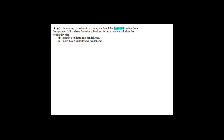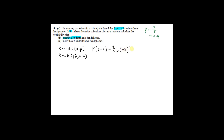In a survey carried out in a school, it is found that 2 out of 5 students have handphones, so the probability that a student has a handphone equals 2/5 = 0.4. If 8 students from that school are chosen at random, X — the number of students with handphones — is binomial with N = 8 and p = 0.4. So P(X = r) = 8Cr × (0.4)^r × (0.6)^(8−r).